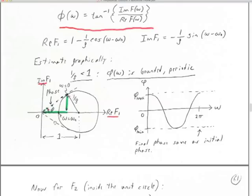Going around the circle from omega equals 0 to omega equals 2pi, we come back to where we started. The final phase is the same as the initial phase. So the phase is limited — this is F1, the minimum phase filter — and its phase spectrum is bounded and periodic. Because rho was greater than 1, we have 1/rho less than 1, so the circle never touches the origin where we're calculating the angle phi.